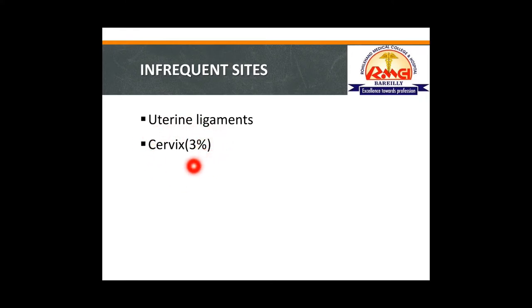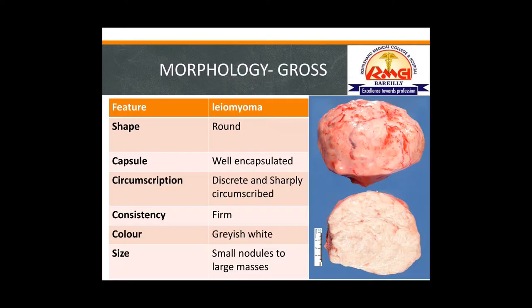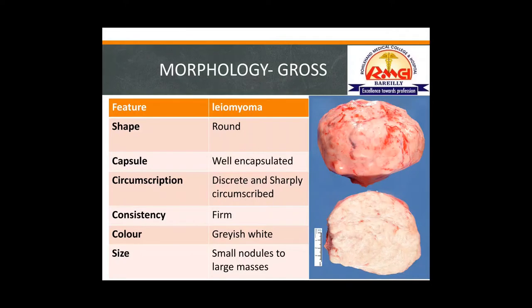Infrequent sites of leiomyoma include the uterine ligaments and the cervix, where it is called cervical leiomyoma, occurring in about 3% of cases.